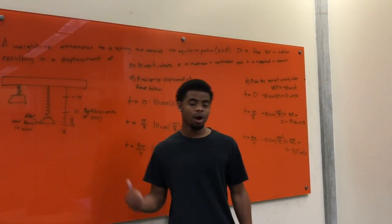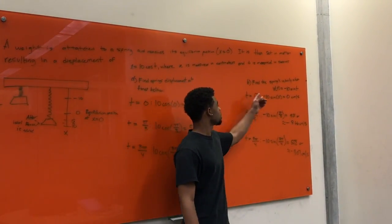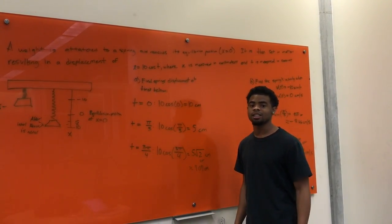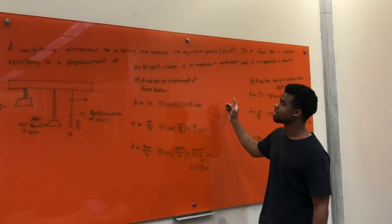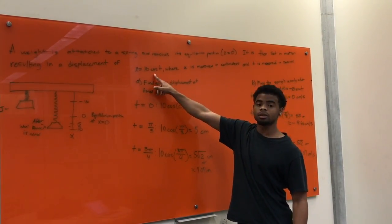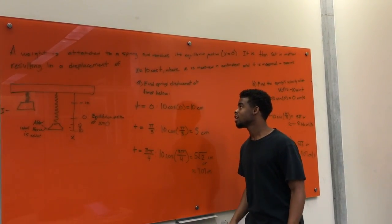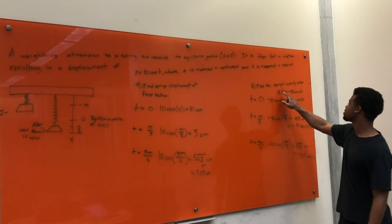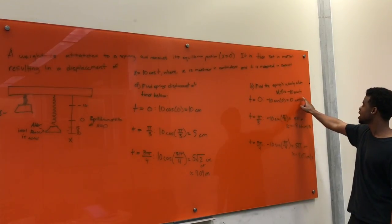For the second part of our problem, we were asked to find the spring's velocity at the given points. We have to remember that in order to find the velocity, we have to find the first derivative of the initial position. In order to do that, to find the derivative, we got v of t is equal to negative 10 sine of t.